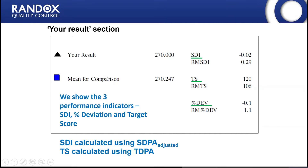In the RICUS reports we have three performance indicators: the Standard Deviation Index (SDI), the Target Score, and the Percentage Deviation. Each shows a different way of comparing the lab's result to the mean for comparison. The SDI is calculated using the SDPA, and the Target Score is calculated using the TDPA. Further information about the statistics can be provided after the webinar.